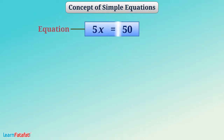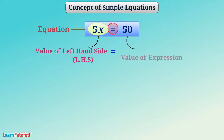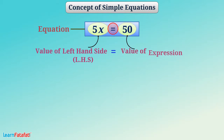In an equation, there is always an equality sign. The equality sign shows that the value of the expression to the left of the sign — that is, the left-hand side or LHS — is equal to the value of the expression to the right of the sign — that is, the right-hand side or RHS.